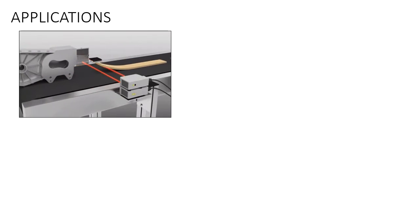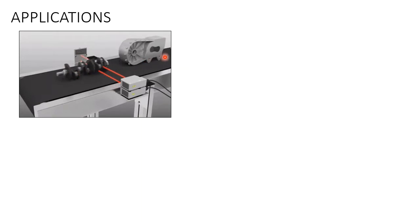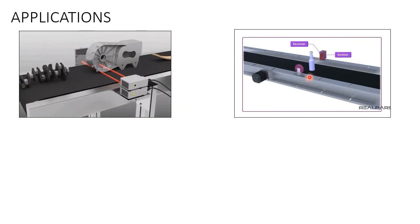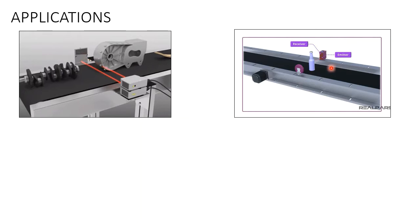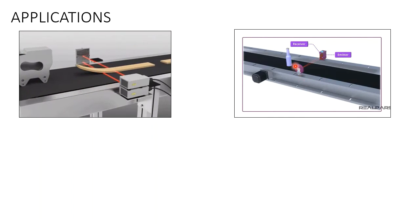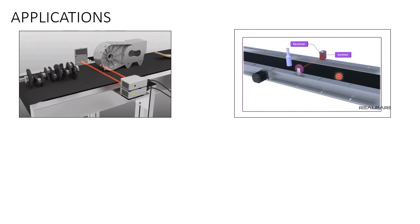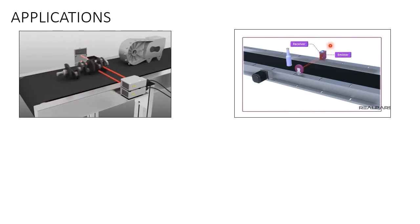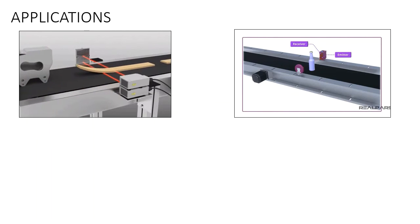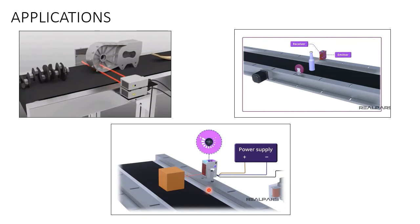In the first application, you can see a red light and objects passing through — the light gets interrupted and the signal on the sensor changes. In the second example, an object passes on a conveyor; the emitter and receiver are on the same side with a reflector on the other side initially reflecting the light, and as soon as the object comes in between, the output of the sensor changes.